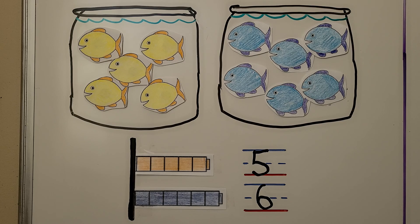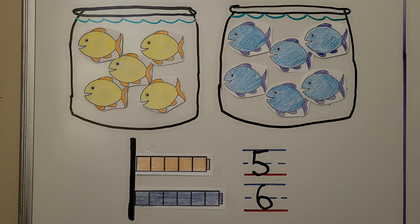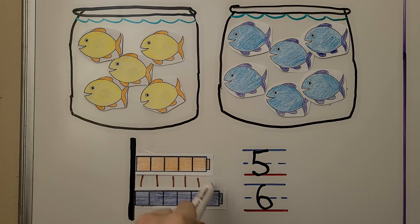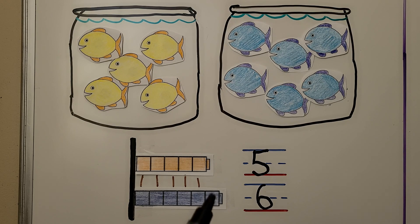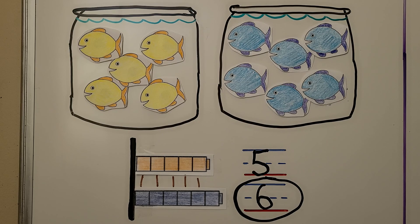We need to circle the greater number that we wrote. We make sure that both cube trains are lined up at the same place at the black line. We can compare the cube trains by matching them. We can match these and these and these and these and these. We can see this one has an extra one. We circle the number that is greater — the number that shows more. Because this cube train is sticking out farther and it's got an extra one, we know six is greater than five. Six is the greater number. We circle the greater number.